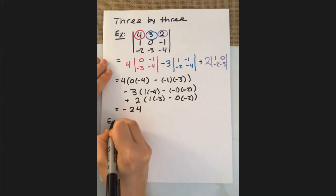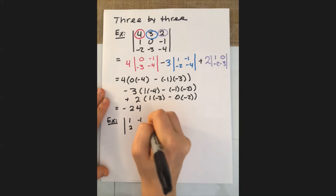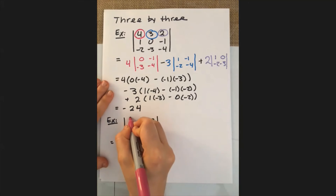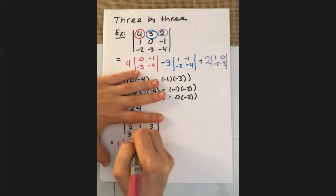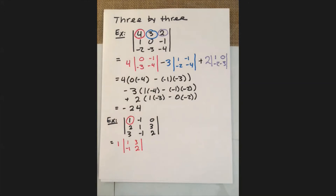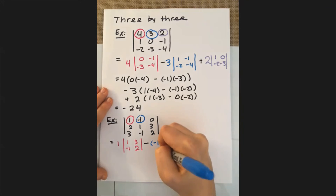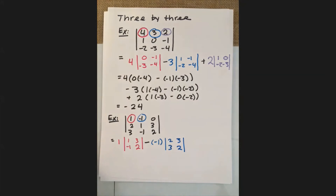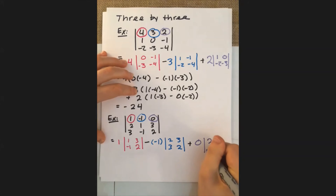Let's walk through another example. In this one, we have the matrix 1, -1, 0, 2, 1, 3, 3, -1, 2. We apply the exact same idea: start with the first entry in the first row as the coefficient on the determinant of everything left behind, which gives us 1 times the determinant of 1, 3, -1, 2. Then, alternating to subtraction, we get minus -1 times the determinant of 2, 3, 3, 2 — and that sign alternation is independent of what sign the entry itself has. Then we add the third component, 0, times the determinant of 2, 1, 3, -1.